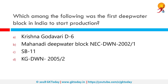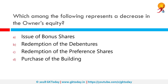Which of the following was the first deepwater block in India to start production? In April 2009, Reliance Industries Limited started pumping natural gas from its D6 block in the Krishna Godavari Basin. D6 was the first deepwater block in India to start production. The correct answer is Krishna Godavari D6.